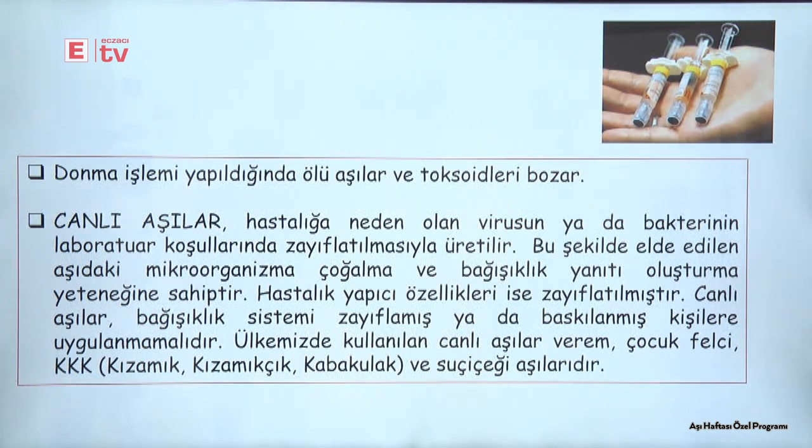Canlı ve ölü aşıyı hatırlamamız açısından birkaç örnek verecek olursak: Canlı aşılar, mikroorganizmanın yani bakteri ya da virüsün laboratuvar koşullarında zayıflatılmasıyla üretiliyorlar. Bağışıklık yanıtı oluşturma yetenekleri yüksek ancak hastalık meydana getirme yetenekleri düşüktür. Örnek olarak 3K ile belirttiğimiz kızamıkçık, kabakulak, verem ve çocuk felci aşıları sayılabilir.